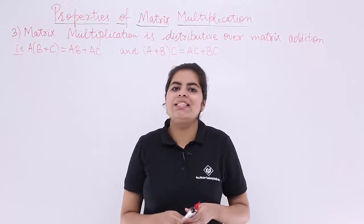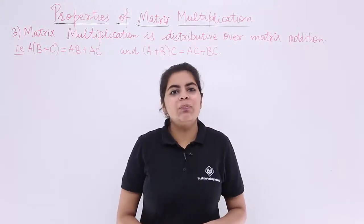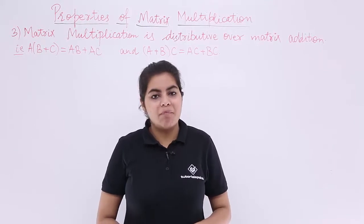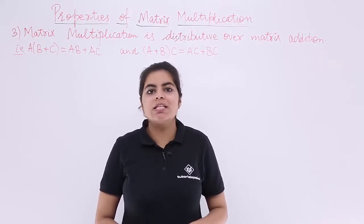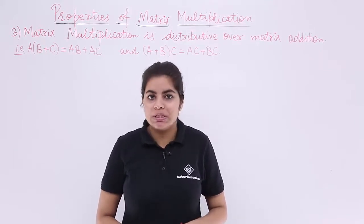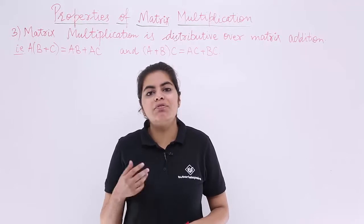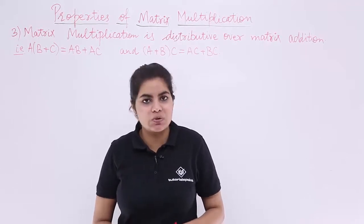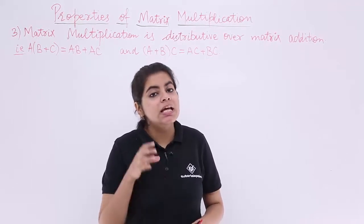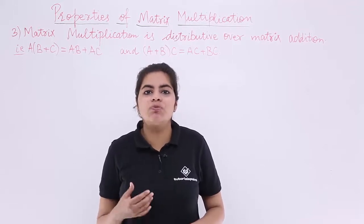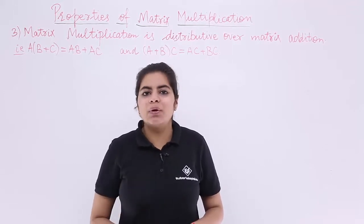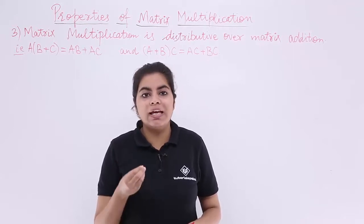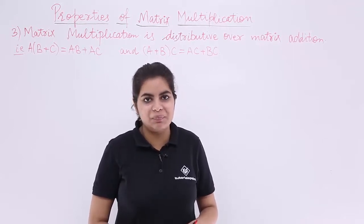In this video, let's see another property based on the concept of matrix multiplication. The property is property number 3 that we are going to deal with. The first and second properties were related to commutativity and associativity. This is regarding the distributive property. Let's see what the property is and then we'll verify it with the help of a numerical example.